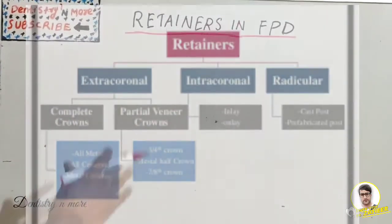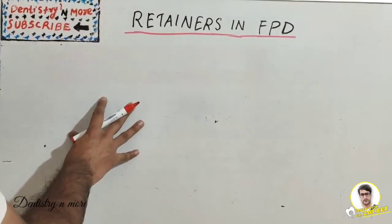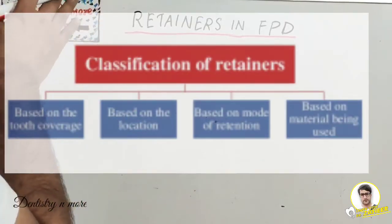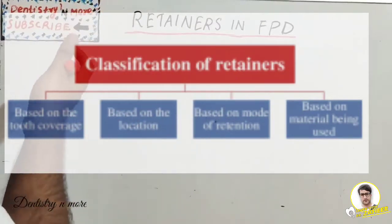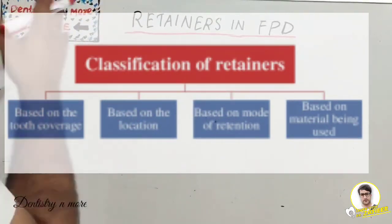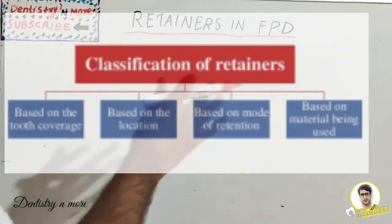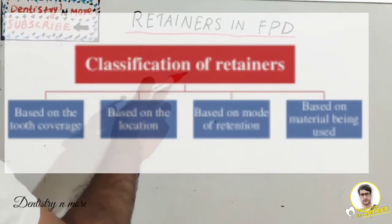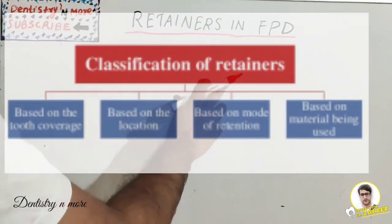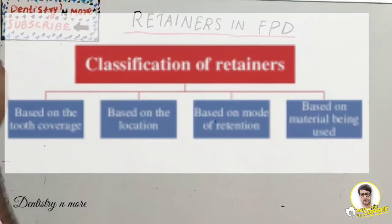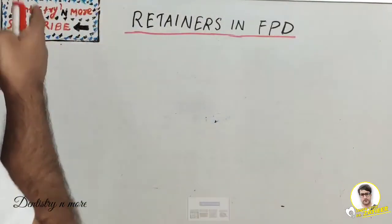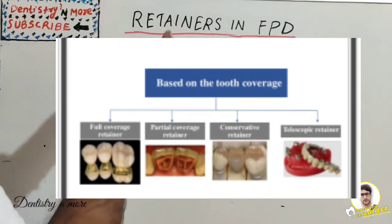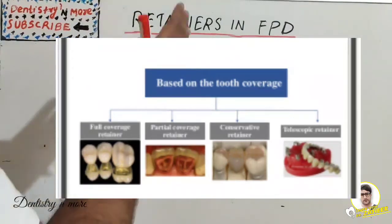The next classification has four types based on: tooth coverage, location, mode of retention, and material being used. Based on tooth coverage, retainers can be divided into full coverage retainer, partial coverage retainer, conservative retainer, and telescopic retainer.